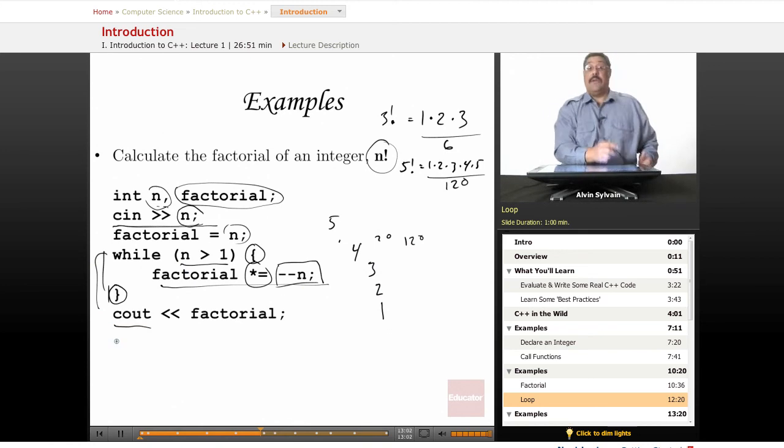And Cout is our character output stream. And this is the output operator. And we output the result, which should be 120. You can put this into a nice little C code if you want. And you can run it and test it. It should work just like this.